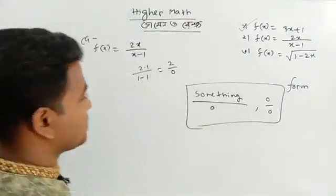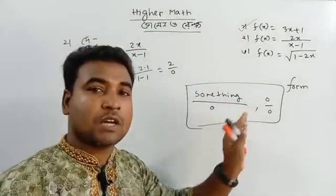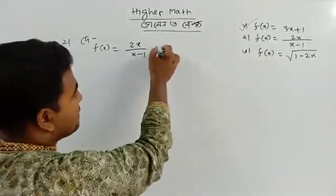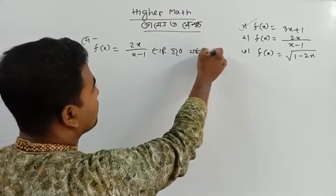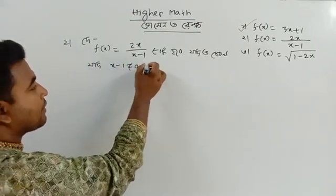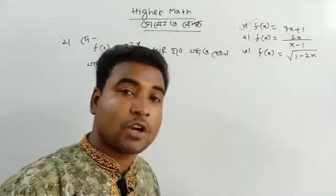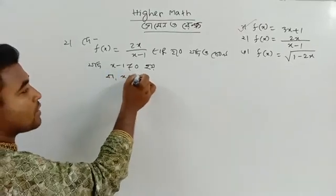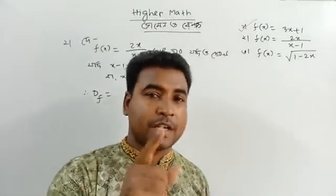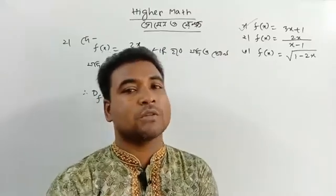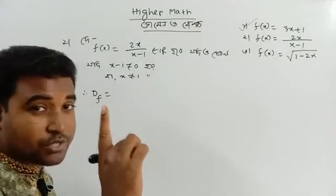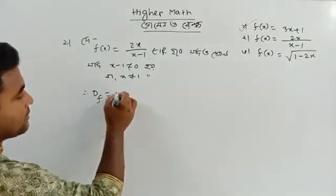Something like 0/0 is undefined. So eta belongs to R. The denominator is 0 when x = 1. So x not equal to 1 — that means domain of f is: x belongs to R, x not equal to 1. If x = 1, then the denominator equals 0, so something divided by 0 is undefined.